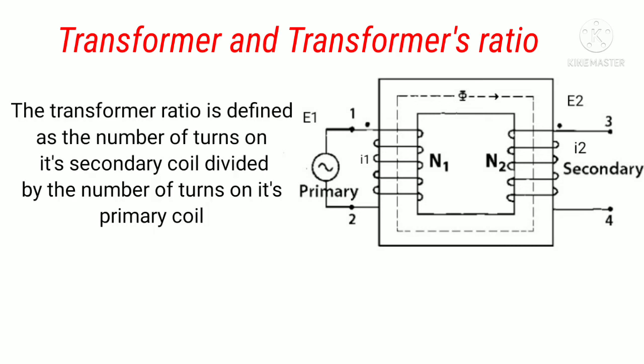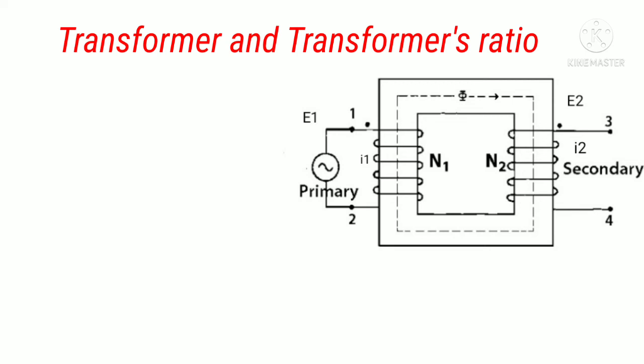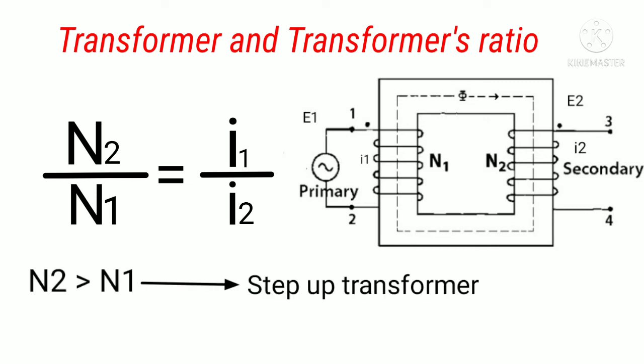The transformer ratio is defined as the number of turns on its secondary coil divided by the number of turns on its primary coil. That is N2 by N1 equal to I1 by I2. If N2 greater than N1, that means number of turns in secondary coil is greater than number of turns in primary coil.